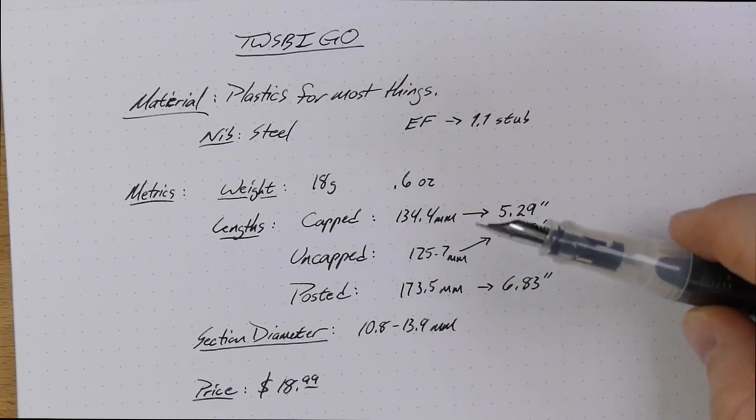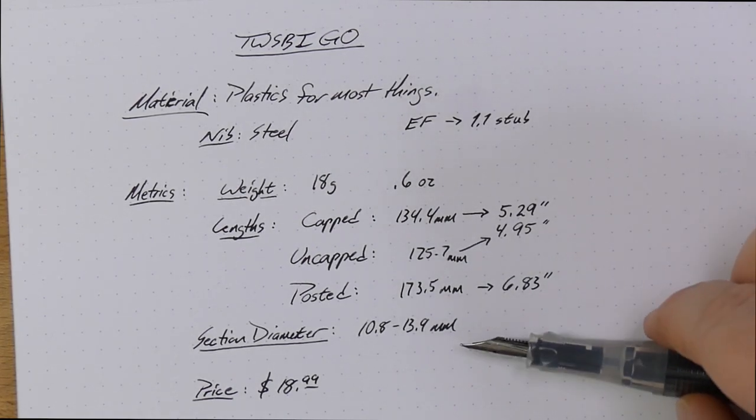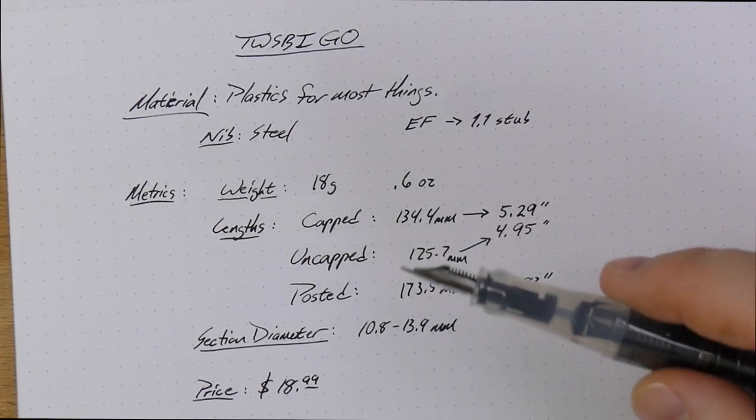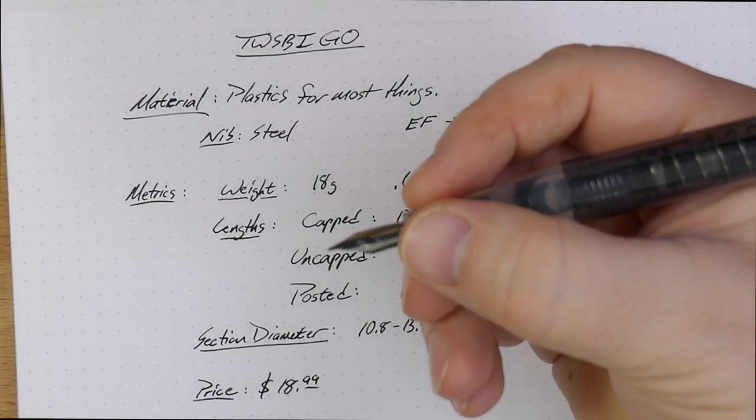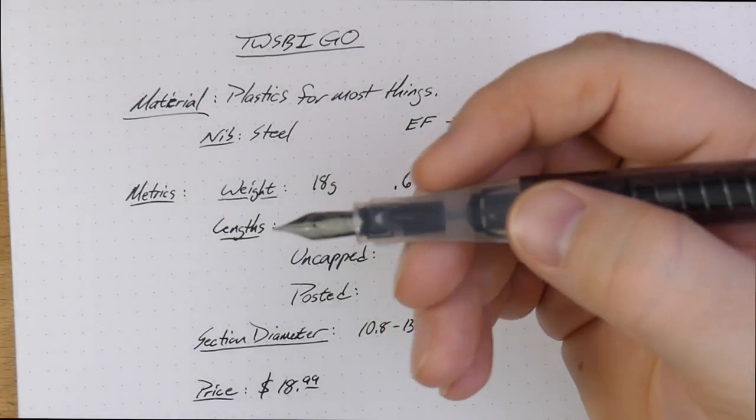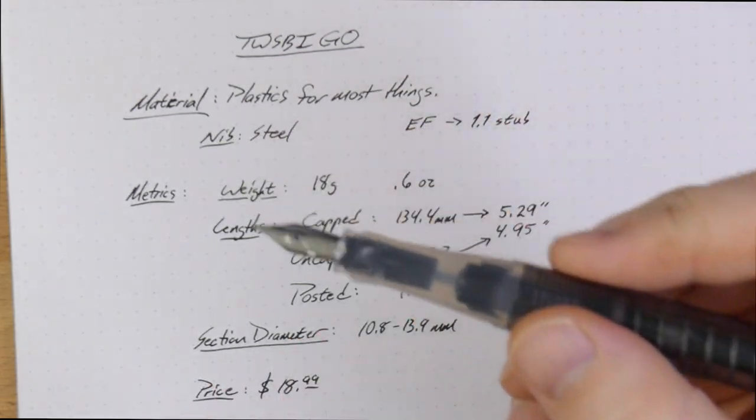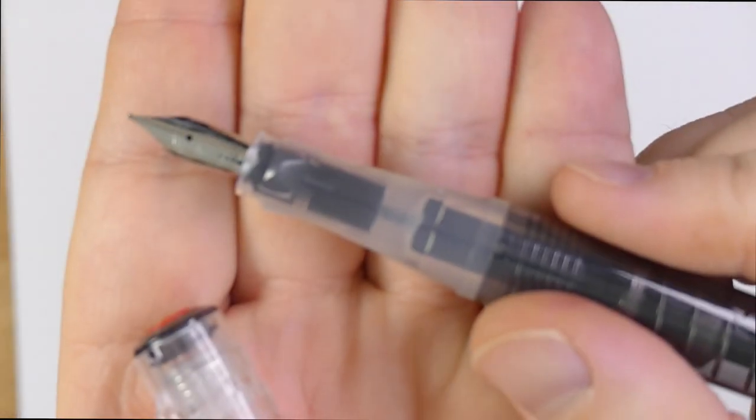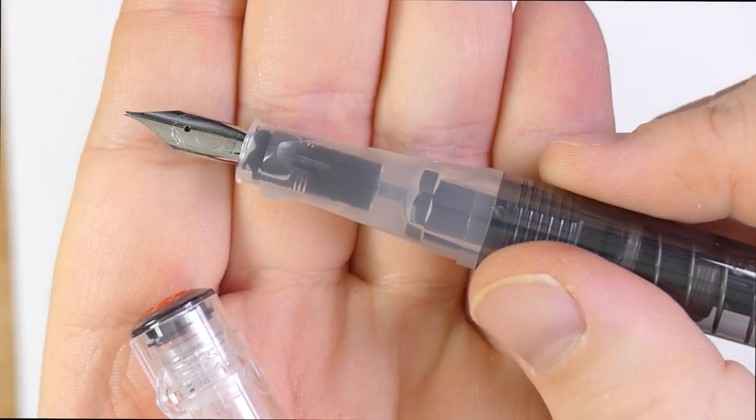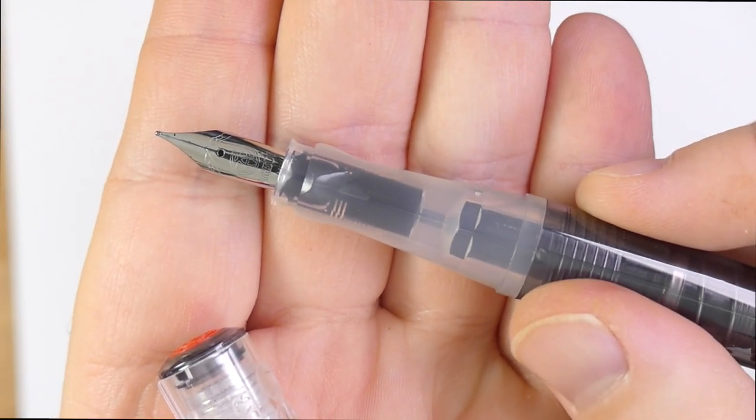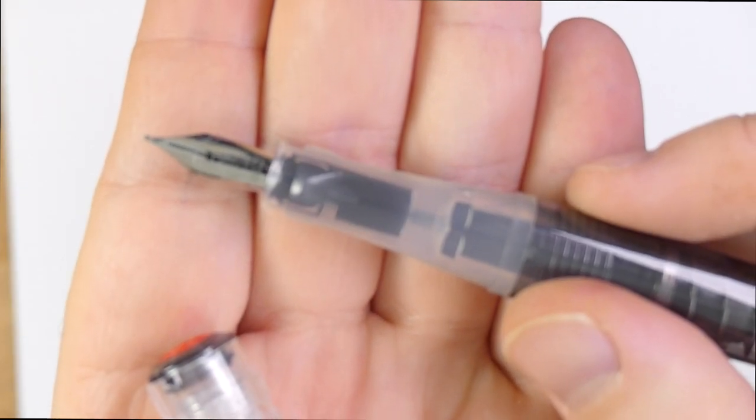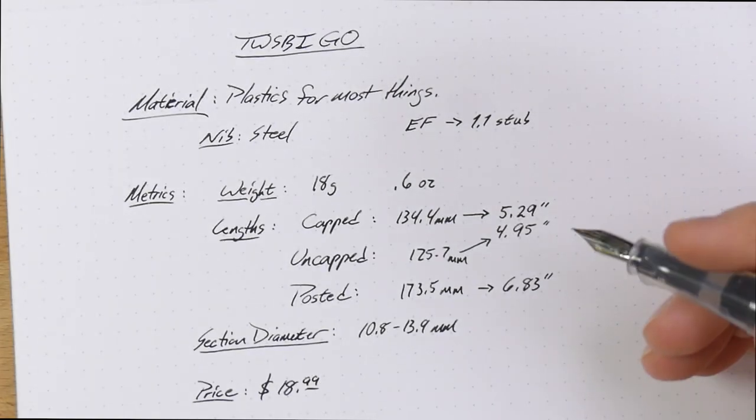Posted, 173. That's almost 7 inches long. It's very long when it's posted, but it doesn't really weigh much. So, who cares? The section diameter goes from 10.8 to 13.9, and that's down here at the beginning or the front of this pen all the way back up to here. There is quite a lot of flare, as you can see here, from the front to the back. So, there's like 3 millimeters of flare, which is kind of a lot.